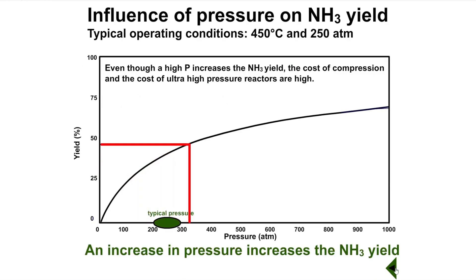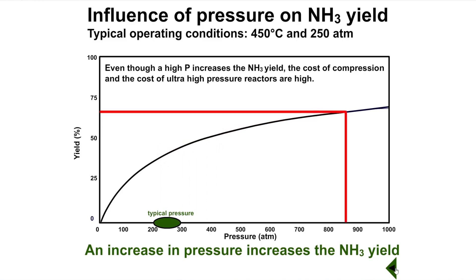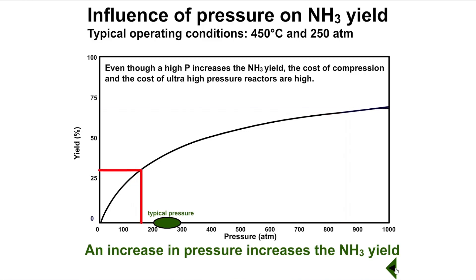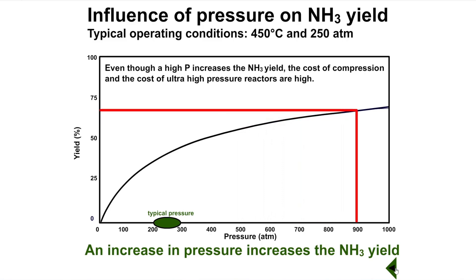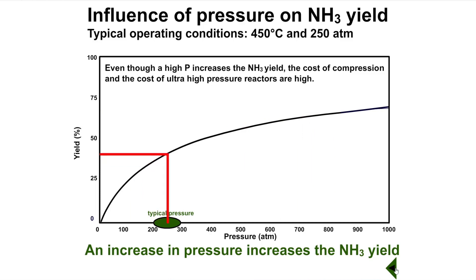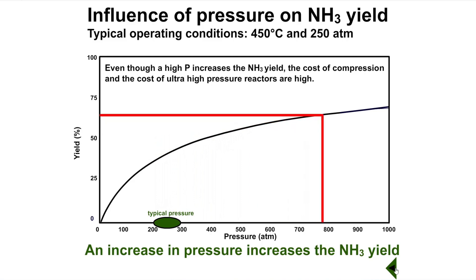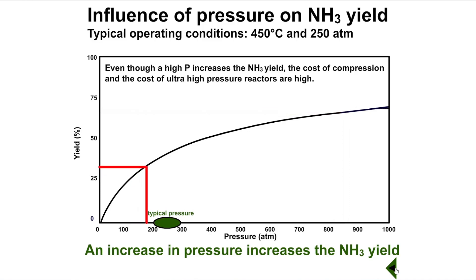The purpose of the Haber process is to produce ammonia, so we want to get a high ammonia yield. We want the dynamic equilibrium to have as high a proportion of ammonia to H2 and N2 as possible. As pressure is increased, the yield of ammonia increases. However, high pressures are dangerous and expensive. Consequently, we need to use an optimal pressure — one for which we get a good yield for a reasonable price while still being safe. Pressures between 200 and 300 atmospheres are typically used in the Haber process.